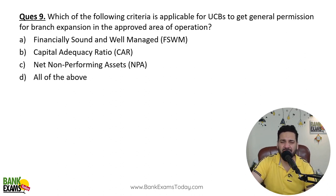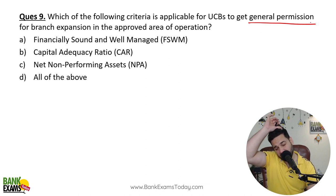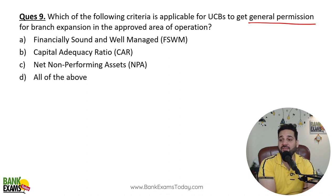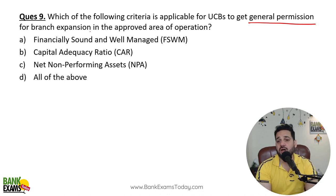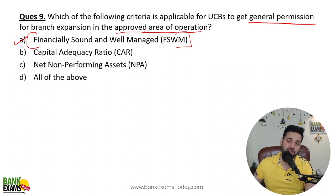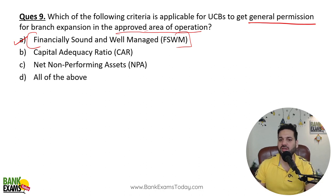What criteria are applicable for Urban Cooperative Banks regarding general permission for branch expansion? General permission means prior approval of RBI is not required — you just report them. Urban cooperative banks can get general permission for branch expansion within the approved area of operations if they satisfy the Financially Sound and Well Managed (FSWM) criteria. If they do satisfy it, they get general permission; if they don't, they need to get prior permission and report within 15 days.